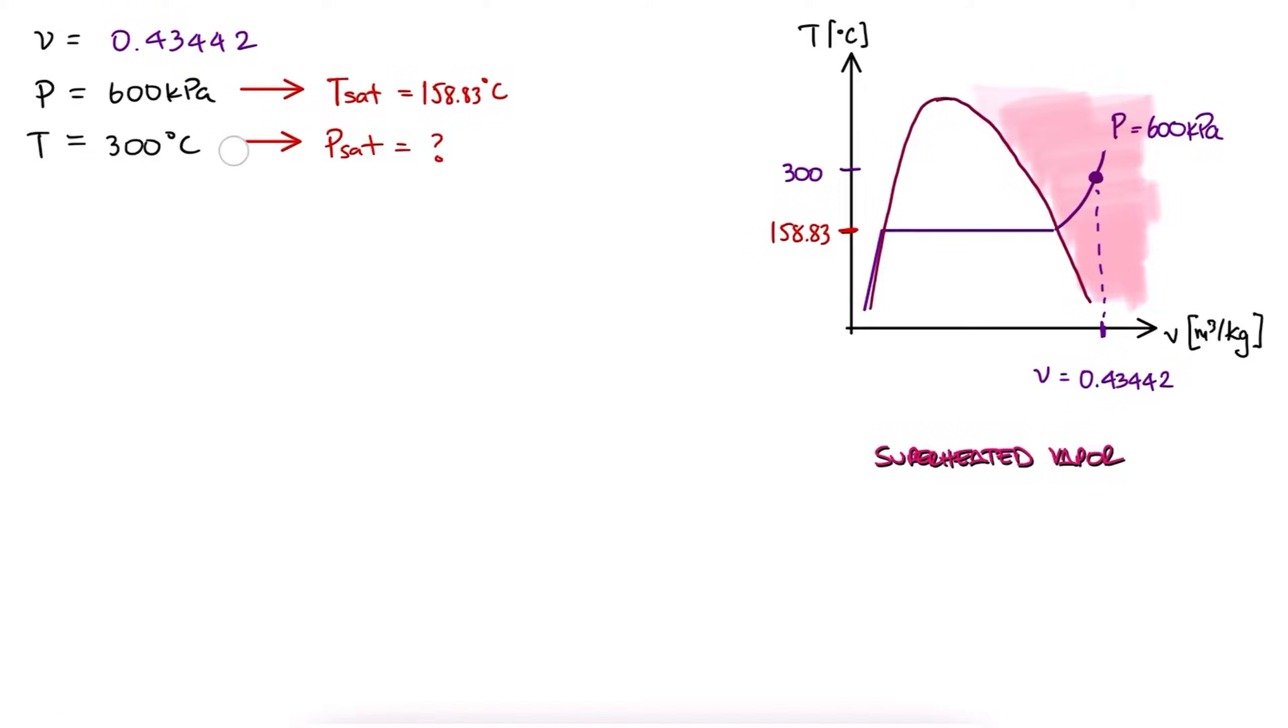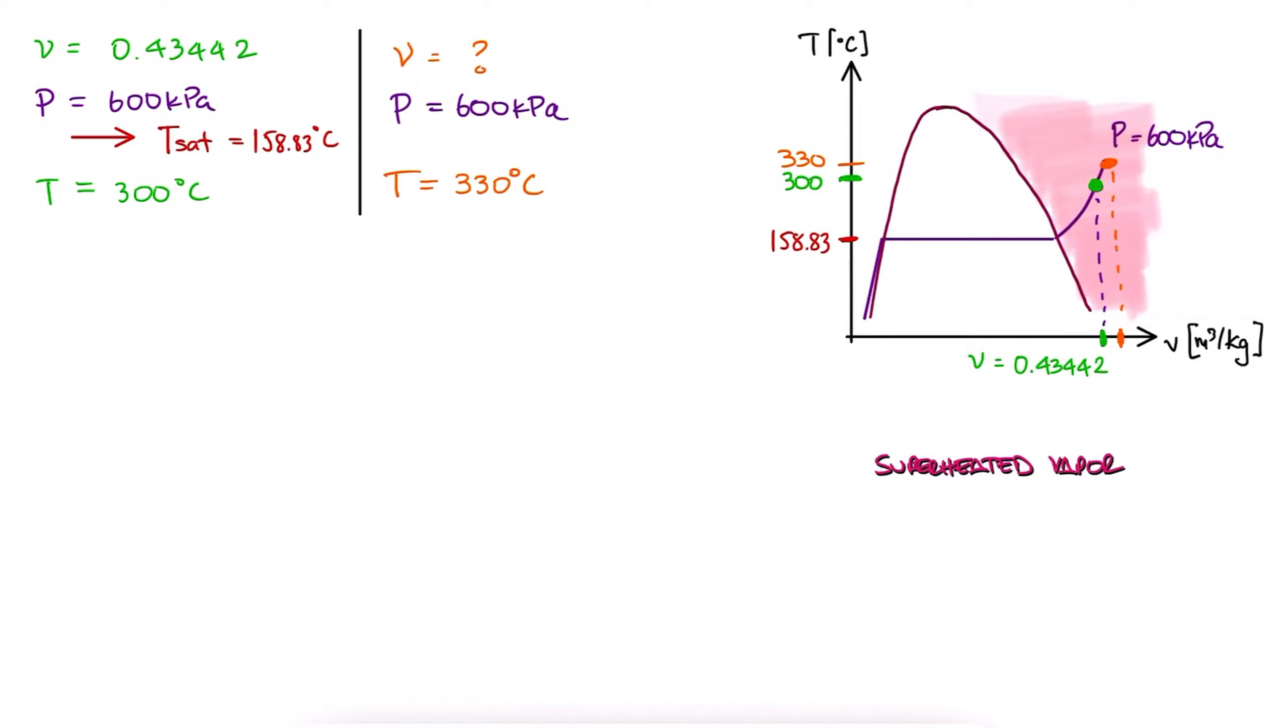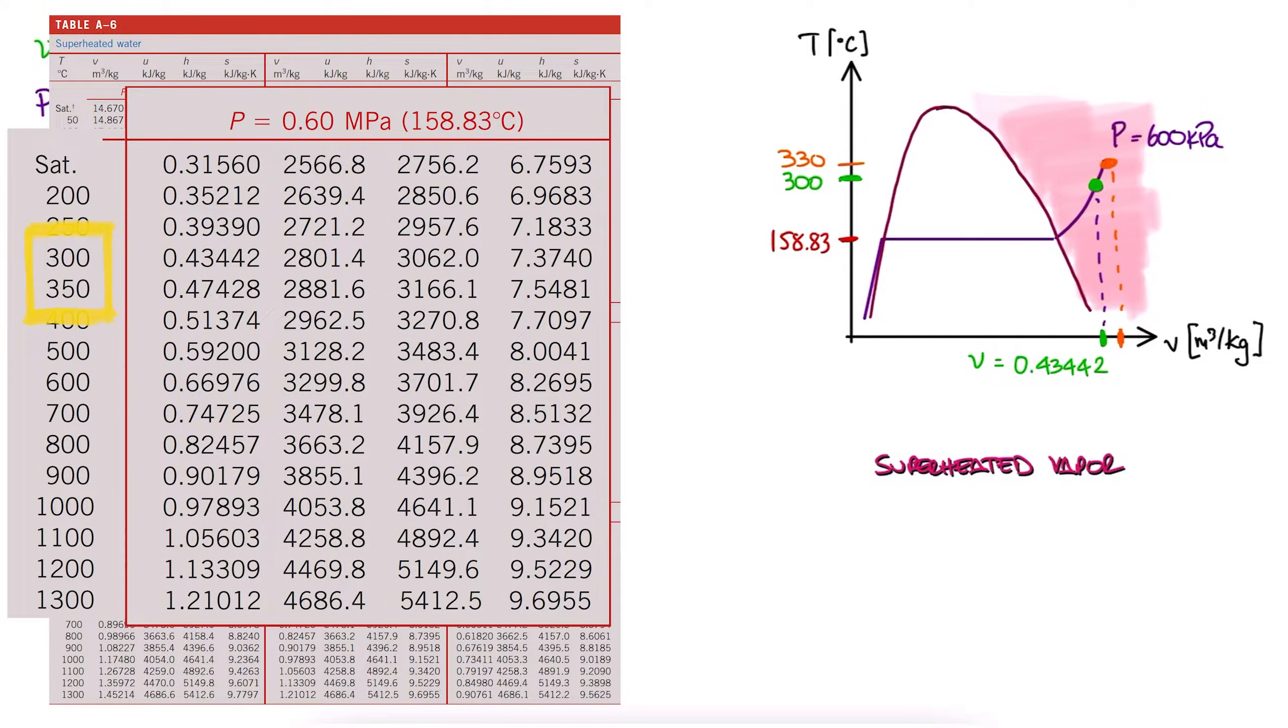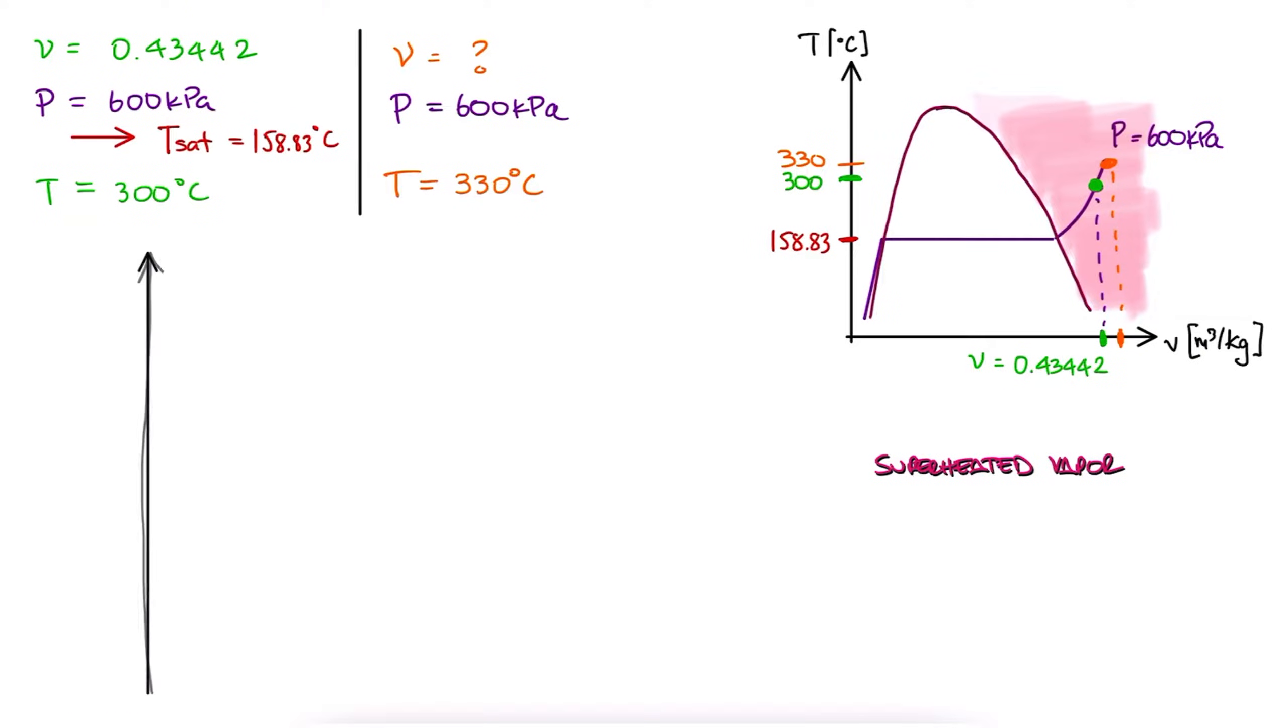Now, what if our pressure is still 600 kilopascals, but now the temperature is 330 degrees Celsius? Since that value is not in the tables, we would have to interpolate. And again, a linear interpolation is not the best option we have, because what we're basically doing in this TV diagram is assuming that the different values that we have between these two points in a superheated region is linear.